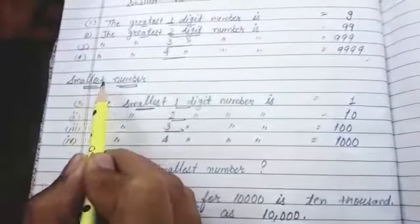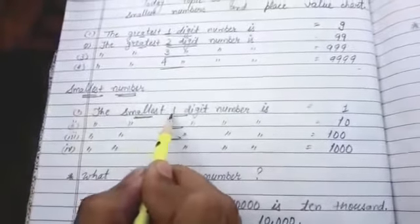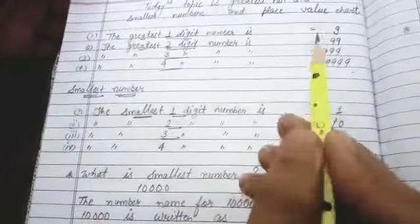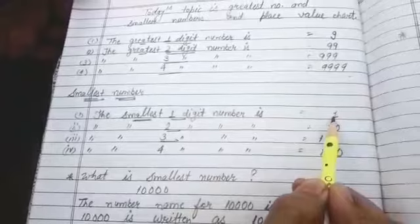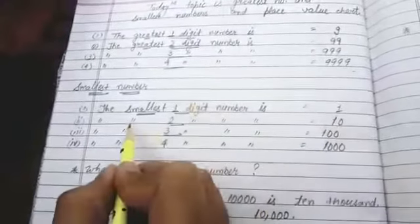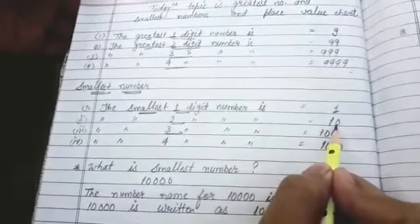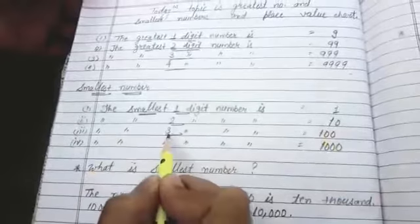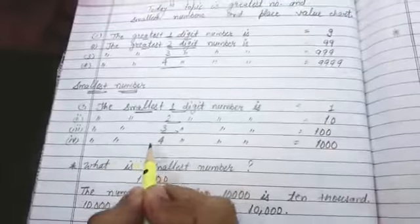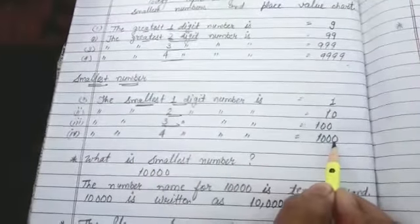Similarly smallest number. We will describe smallest number. The smallest one digit number is 1. Like 1 to 9 which is the smallest number? 1. Same as it is the smallest two digit number is 10. The smallest three digit number is 100. And the smallest four digit number is 1000.